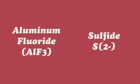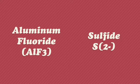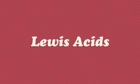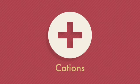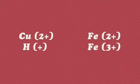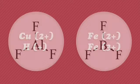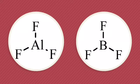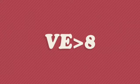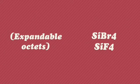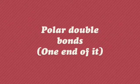Turns out this theory opens a lot of doors for chemists. For example, we can call aluminum fluoride an acid and sulfide a base thanks to his new and improved viewpoint. So let's talk about atoms and molecules that can be Lewis acids. All cations can be Lewis acids because they have electron availability — this includes copper 2+, iron 2+, iron 3+, hydrogen, etc. Any atom, ion, or molecule with an incomplete octet of electrons; molecules where the central atom can have more than 8 valence shell electrons, or expandable octets; and polar double bonds.